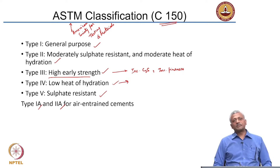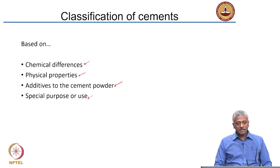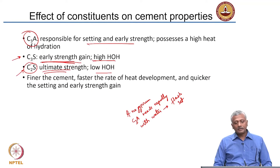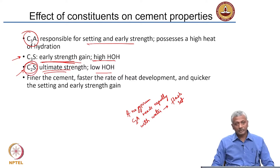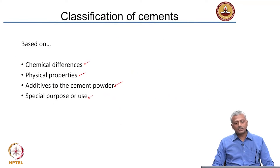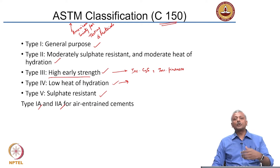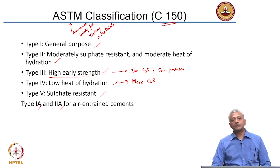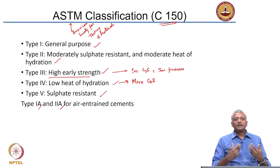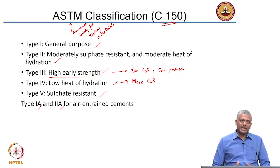What about low heat of hydration cement? We talked about the different cementitious compounds, and the one which had low heat of hydration was C2S. C2S has low heat of hydration, so in a low heat of hydration cement you will have more C2S compared to general purpose cement. This is how you actually look at producing different characteristics from the same set of compounds.